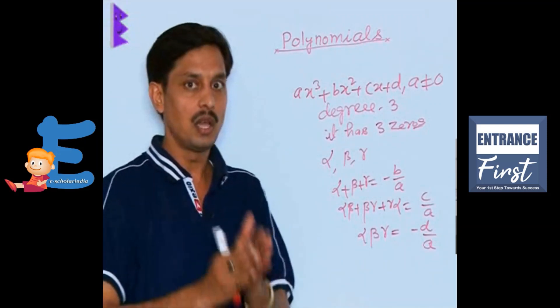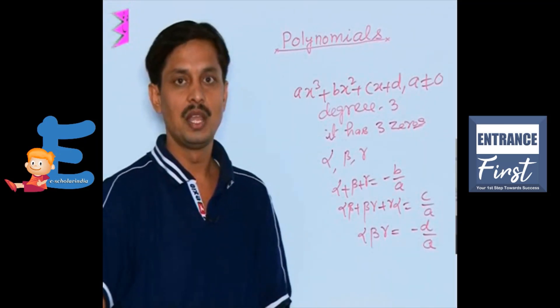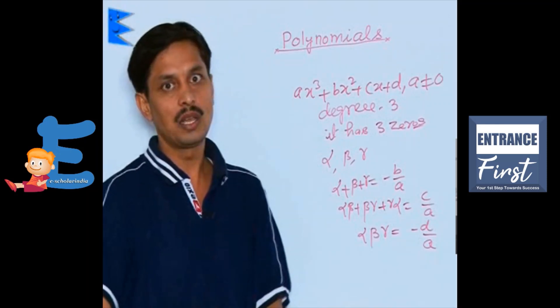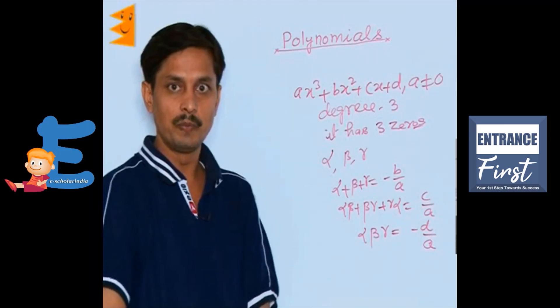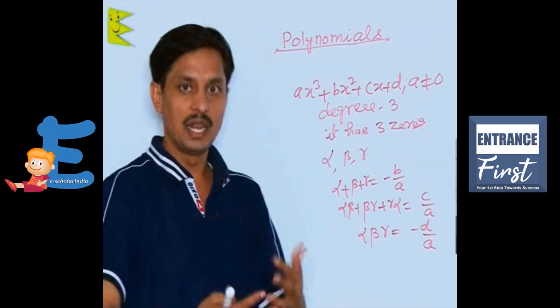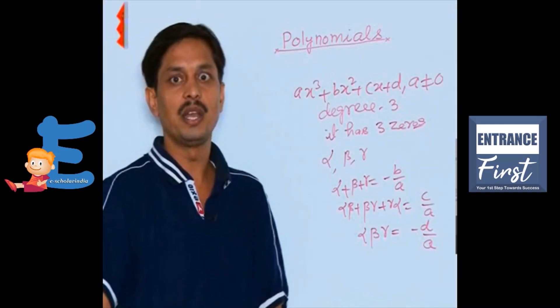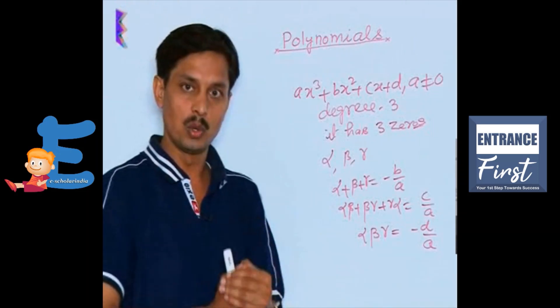This is something about what is a polynomial algebraic expression, having special kind of form a0 plus a1 x as earlier discussed with you, then types, then degrees, then zeros, then something how to calculate, how to obtain and how to establish the relation between their zeros.